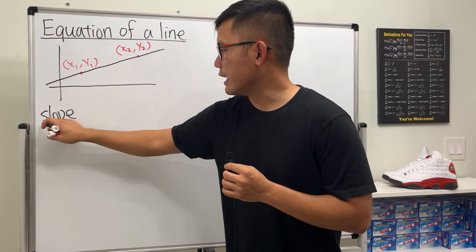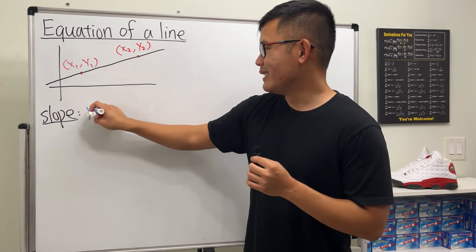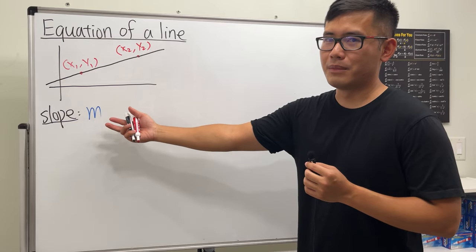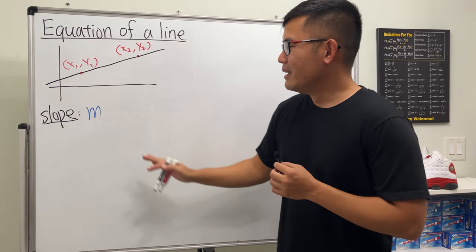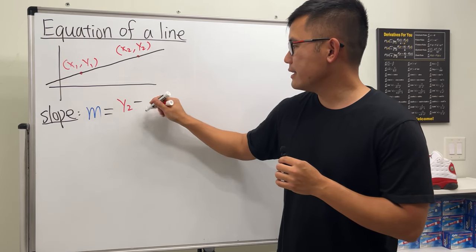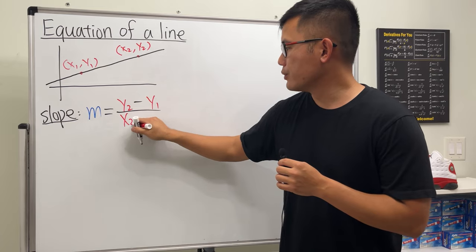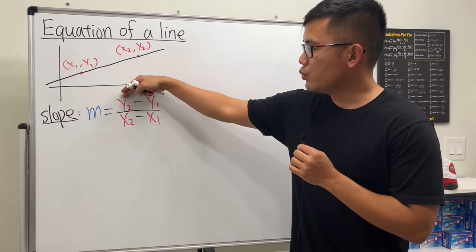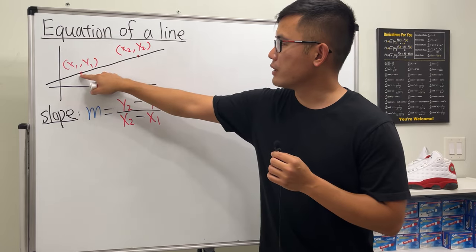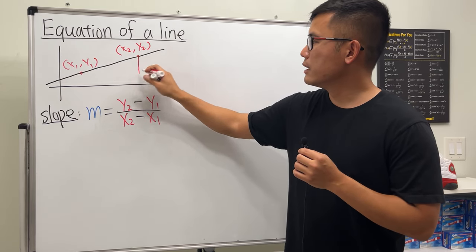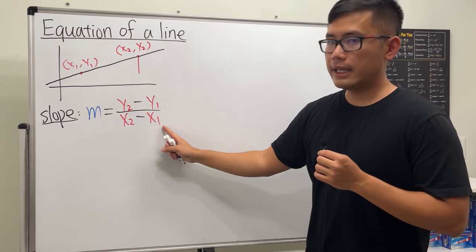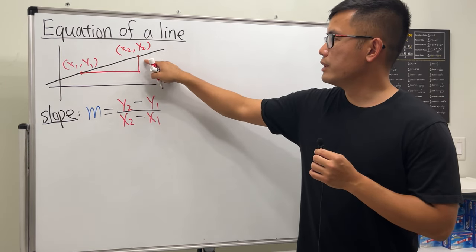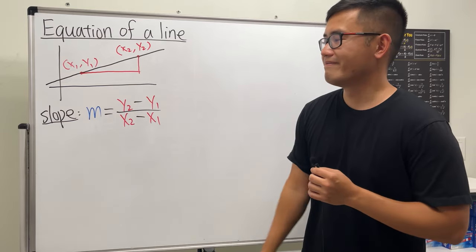The first thing we need is the slope, and the notation for that is m. The slope formula is m = (y2 − y1) / (x2 − x1). When we do y2 minus y1, we are finding the vertical distance from one point to the other, and x2 minus x1 gives the horizontal change.